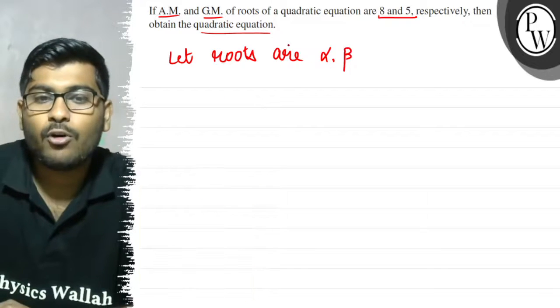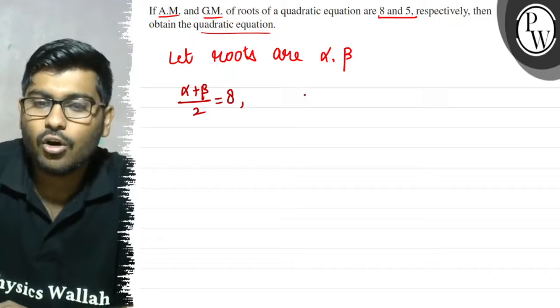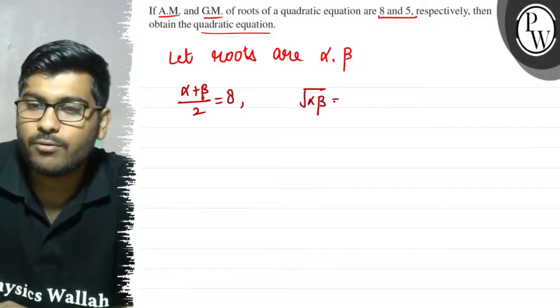What is given? The arithmetic mean means alpha plus beta by 2, that is 8, and the geometric mean means root alpha beta, that is 5.